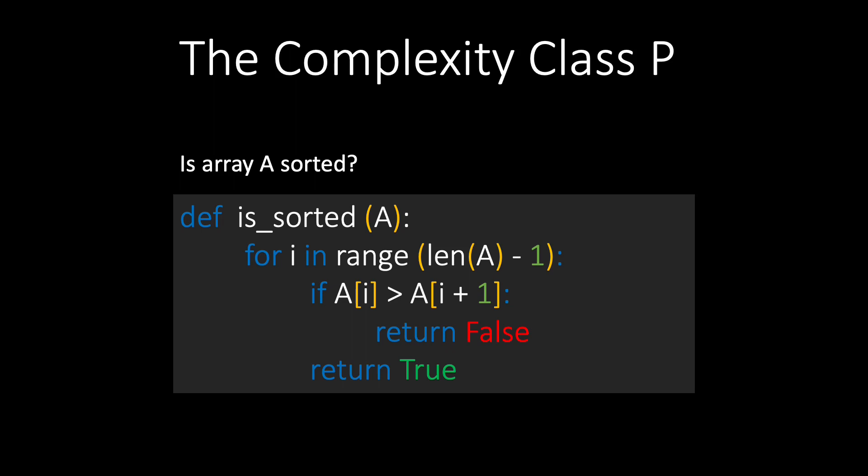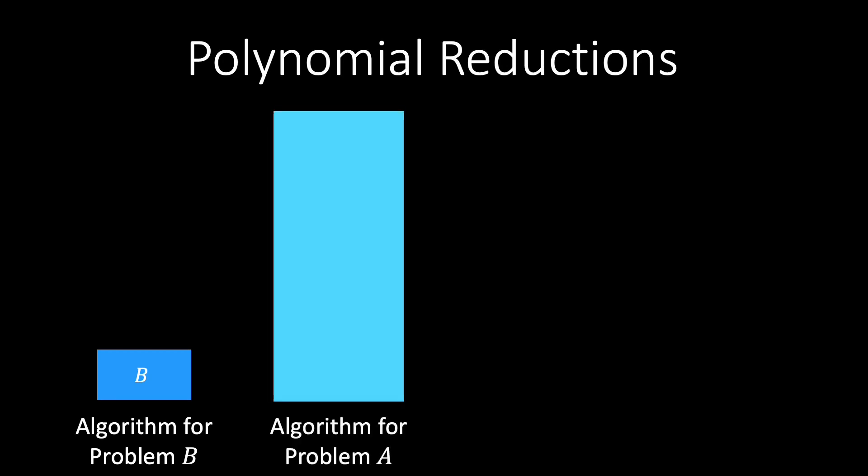One way of proving that a decision problem is in P is to simply provide a polynomial time algorithm. Another option is to show that problem A is not more difficult than problem B. This method is known as polynomial time reduction, or simply polynomial reduction. Suppose we have an algorithm that solves problem B.